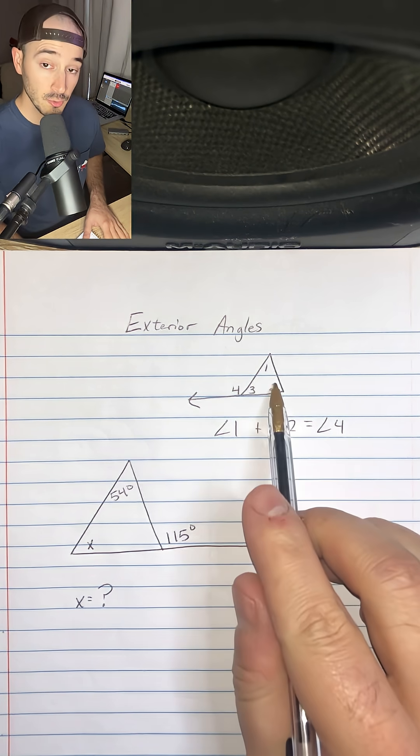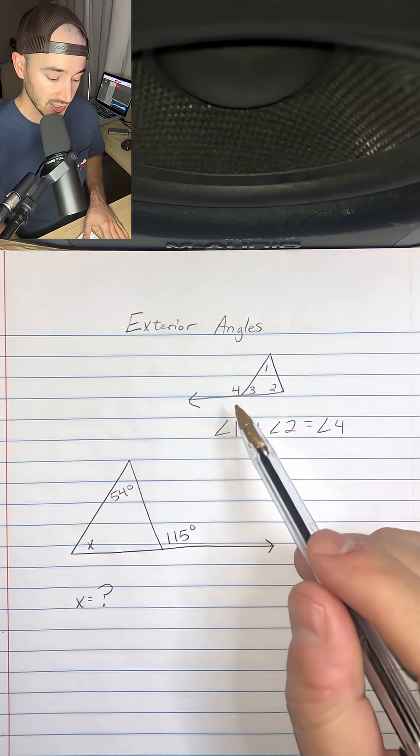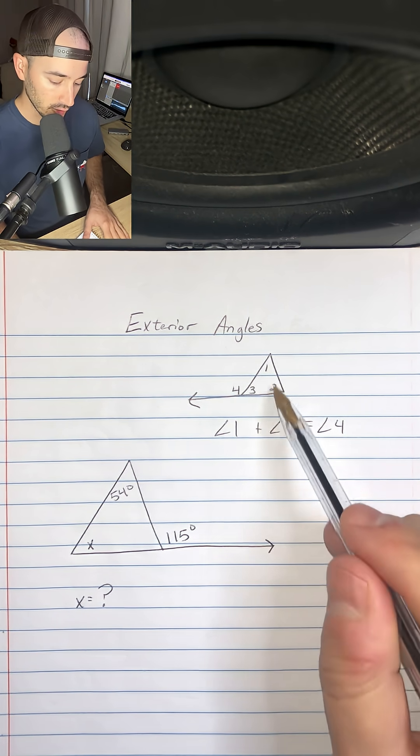So 1 and 2 are called remote interiors, because they're interior on the triangle and they're remote or opposite from angle 4.